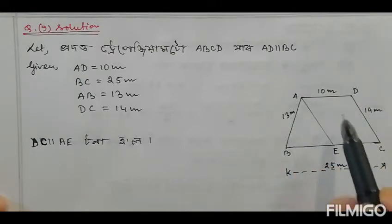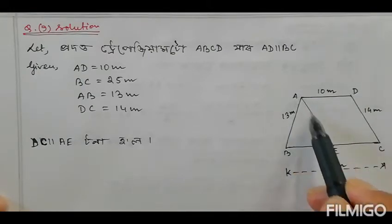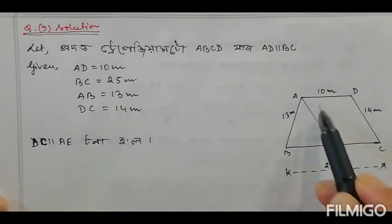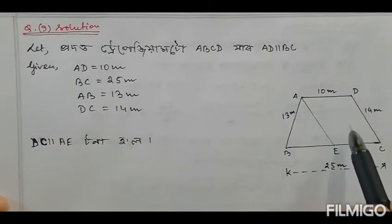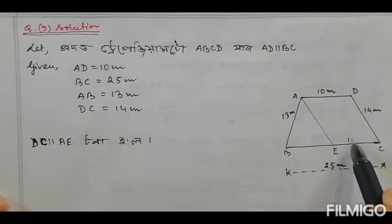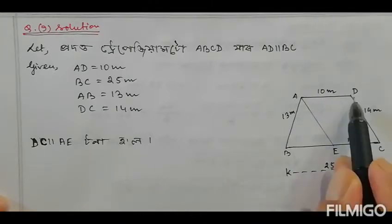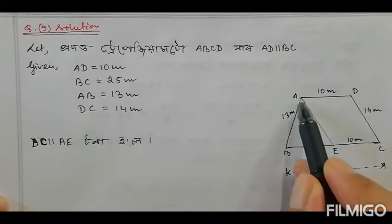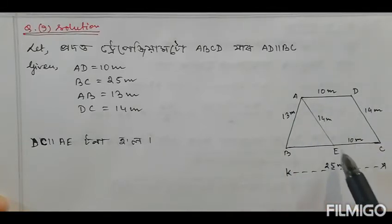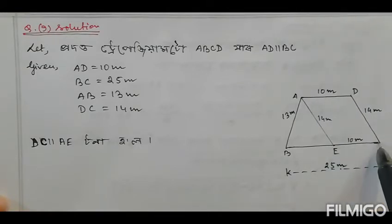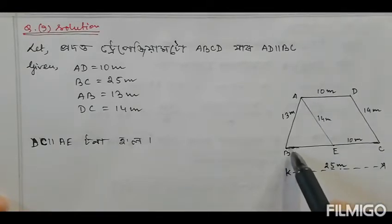So, if AD equals AE, then the number values follow. EC plus AD equals 10m and BC is 25m. So EC is what remains when AD is subtracted from BC.